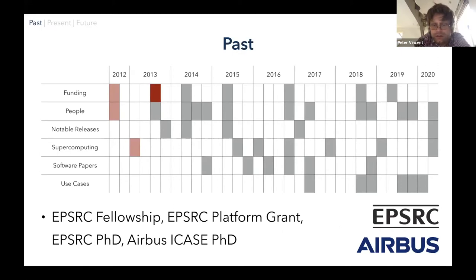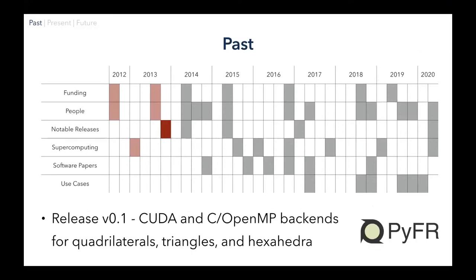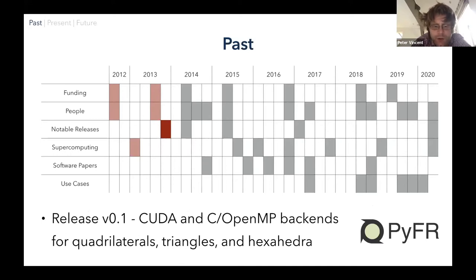I then received various pieces of funding, and in particular what's called an EPSRC fellowship — like an NSF early career award in the US. That was a five-year grant running through to 2018, which really acted to underpin all of this work. Without that, I don't think it could have happened as it did. Two other PhD students, George Demos and Harry Davis, were hired at that point, expanding the team. By just before Christmas 2013, we had our first public release on GitHub, open-sourced under a BSD license — version 0.1 — with support for a CUDA backend for Nvidia GPUs and a C and OpenMP backend for CPUs, and quadrilaterals and triangles in 2D, and hexahedra in 3D.